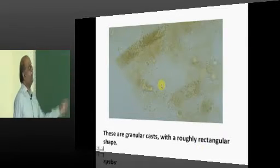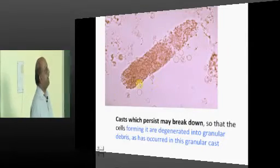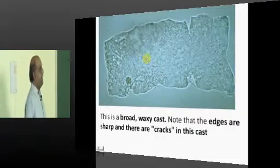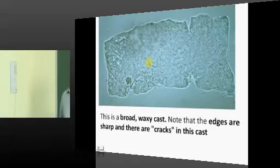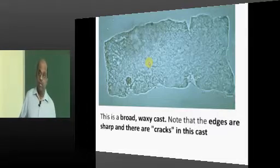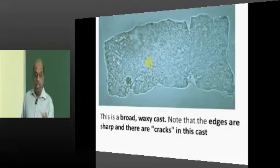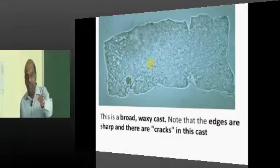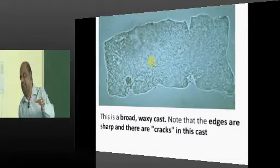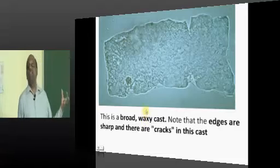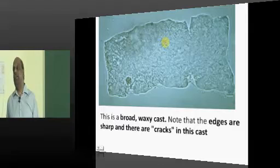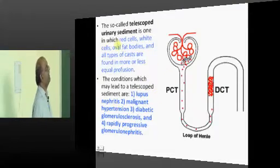This is a classical microscopic examination of how granular casts look, and this is another example of granular debris. Now, broad waxy casts are very classical of dilated tubules in a patient with chronic kidney disease. If the patient is having a chronic tubular pathology, such as tubular interstitial disease, the tubules typically become dilated, and casts produced in such a setting are broad and waxy.